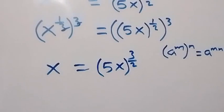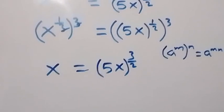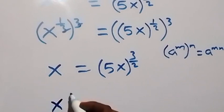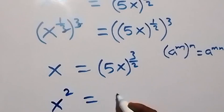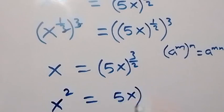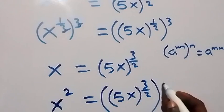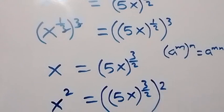Then in the next step, from here we raise both sides to power 2. On the left we have x raised to power 2, which is x squared. On the right we have 5x raised to power 3 over 2, then also raised to power 2.